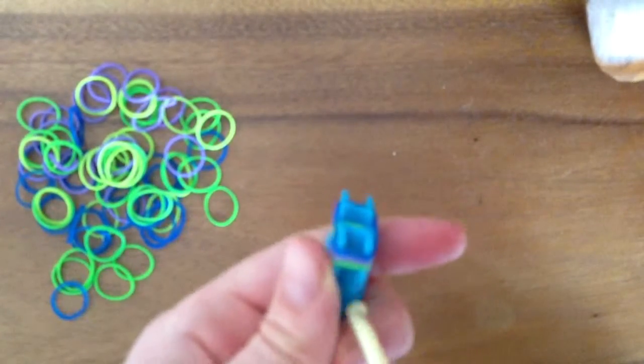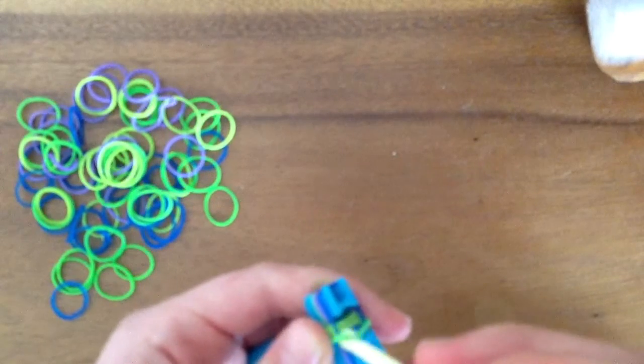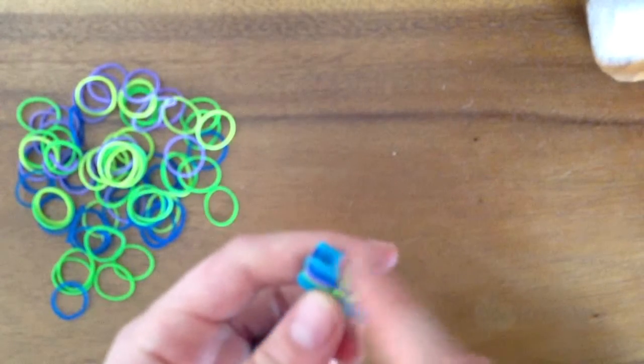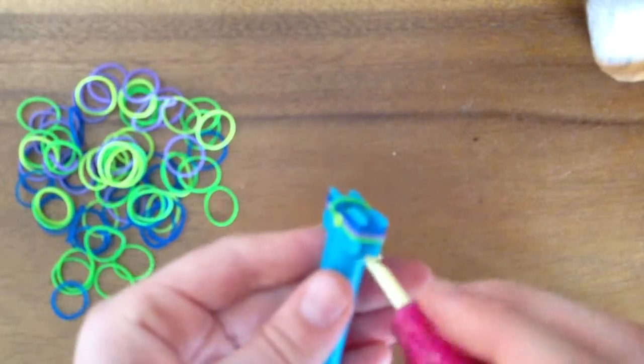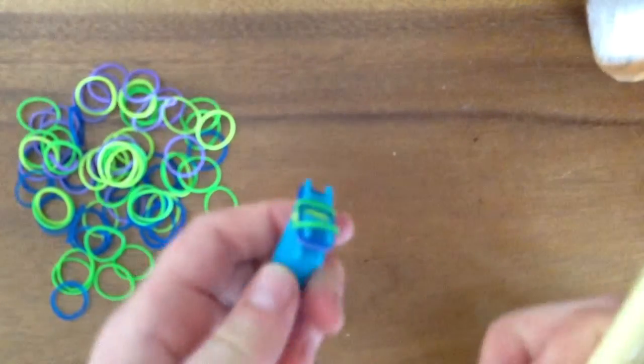Turn it to the side, pick the bottom rainbow loom rubber band up, and on the other side too, and bring it over and let go.